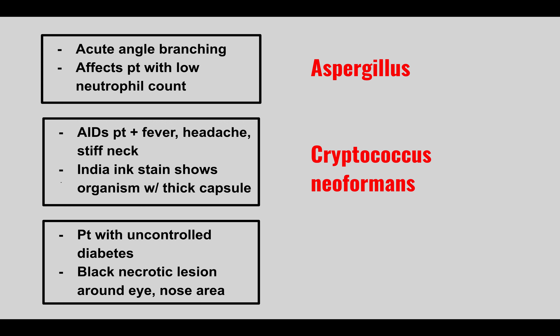The next patient is going to have uncontrolled diabetes with a black necrotic lesion around the eye and nose area. So this is Mucor and Rhizopus, also called mucormycosis. It's often seen in patients that have diabetic ketoacidosis, really high blood sugar levels, and there's a blackening around the skin on the face.